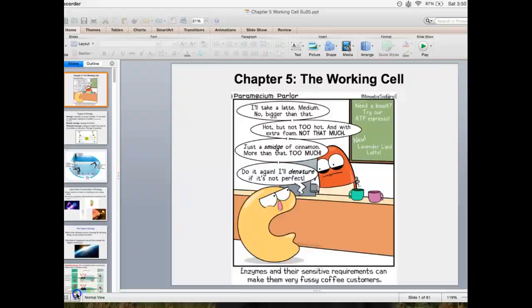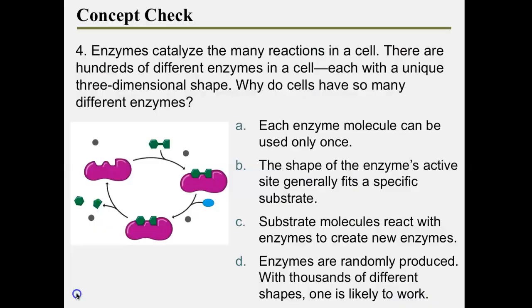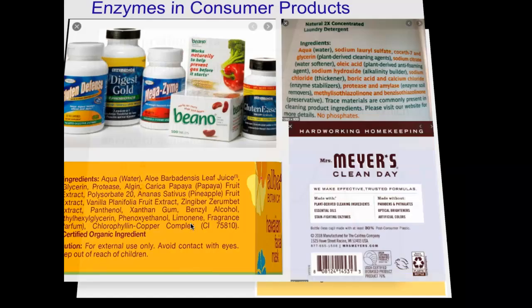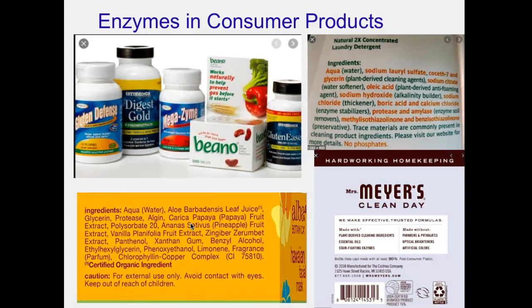The concept check answer is letter B: the shape of the enzyme's active site generally fits a specific substrate, so the enzyme only works on one specific kind of chemical reaction. Also note from your graph that the normal energy of activation is letter B. Enzymes are proteins and proteins can denature. The three big external factors — pH, high temperature, and salt — can all denature proteins and therefore denature enzymes. If you denature an enzyme, the enzyme does not work anymore.